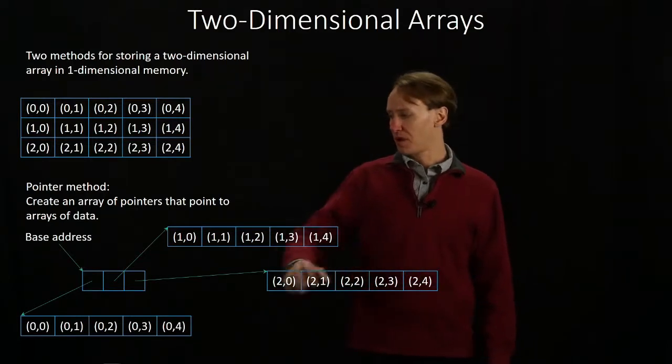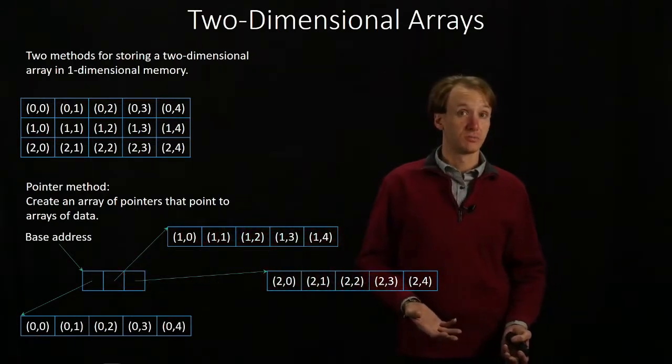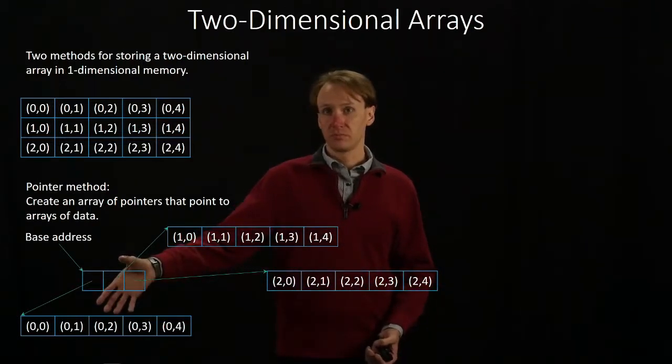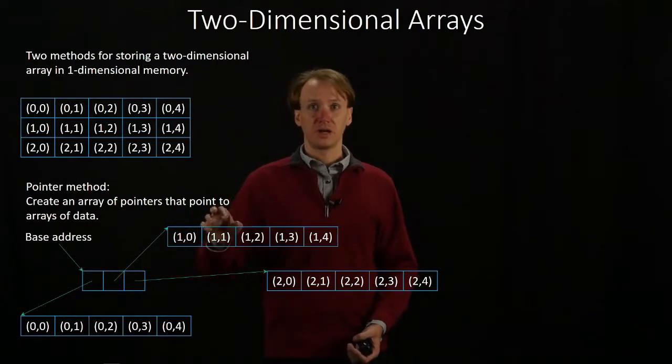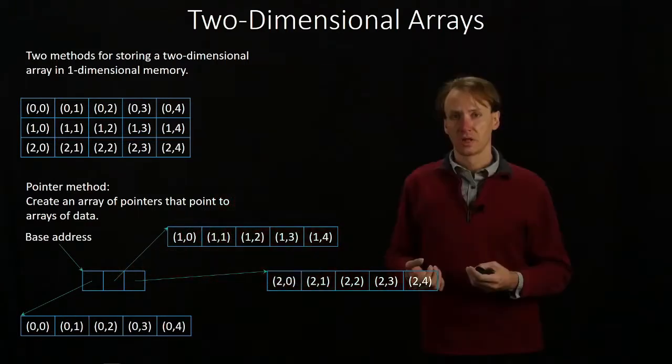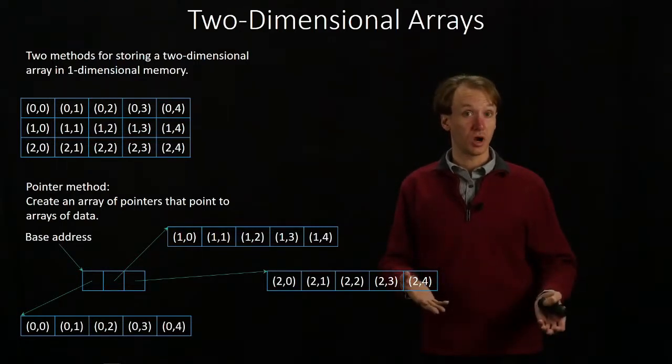This time I have some core array that just consists of pointers. Each one of the elements in my base array here is pointing to some array that actually contains data. So now I've got three arrays, each of which contain the data from one row.